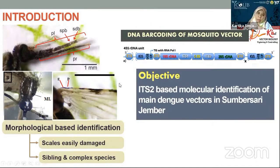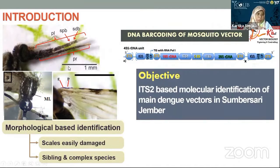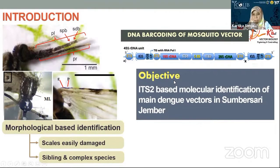Therefore, using a molecular marker — in this case DNA, known as DNA barcoding — is very important to confirm the identity of this vector. One of the commonly used DNA barcodes for mosquitoes is ITS2. The objective of our research in this presentation is ITS2-based molecular identification of the potential dengue vectors in Sumber Sari, Jember, Indonesia.